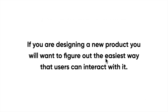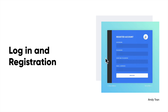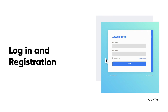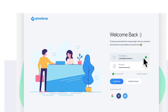If you're designing a new product, you'll want to figure out the easiest way that users can interact with it. Take login and registration — we always ask people to sign up, sign in, log in, and log out. Constantly re-entering your name, email, username, or password is tiresome. Design patterns solve that, such as social login or a 'remember me' checkbox.